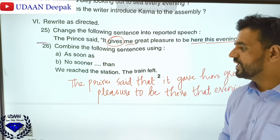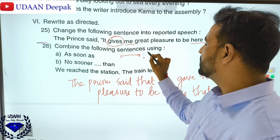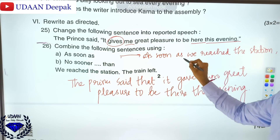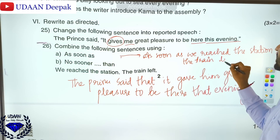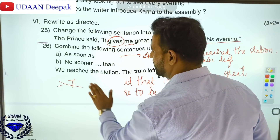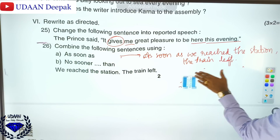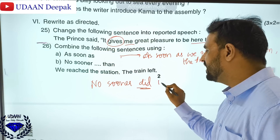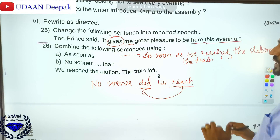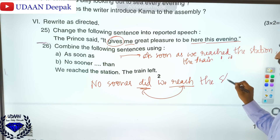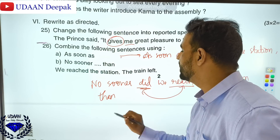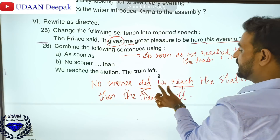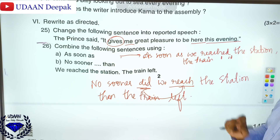We reached the station; the train left. Using 'as soon as': 'As soon as we reached the station, the train left.' Using 'no sooner...than': 'No sooner did we reach the station than the train left.' Note: 'did' must come here because it is past tense, and two past forms cannot come together, so 'reach' remains in base form after 'did.'